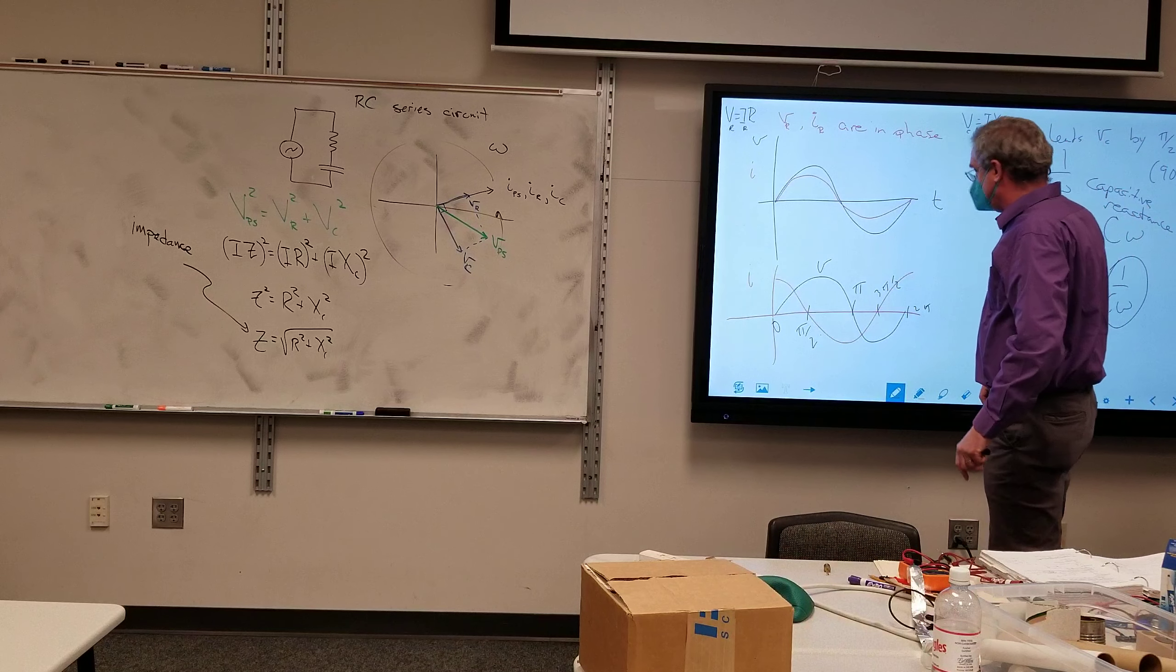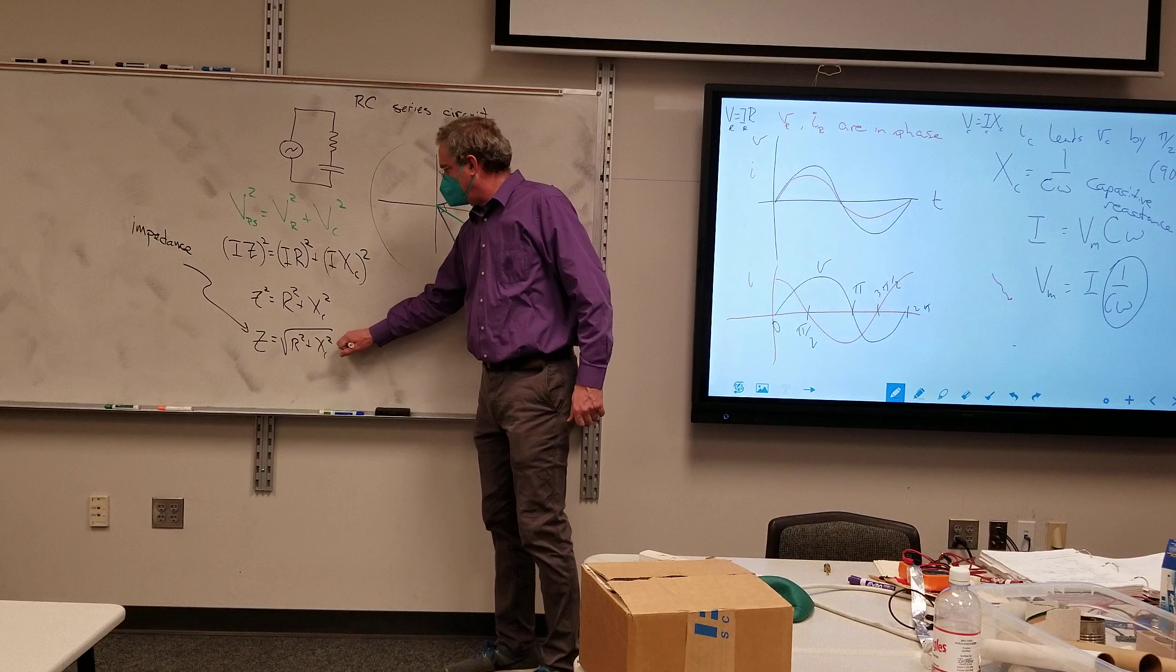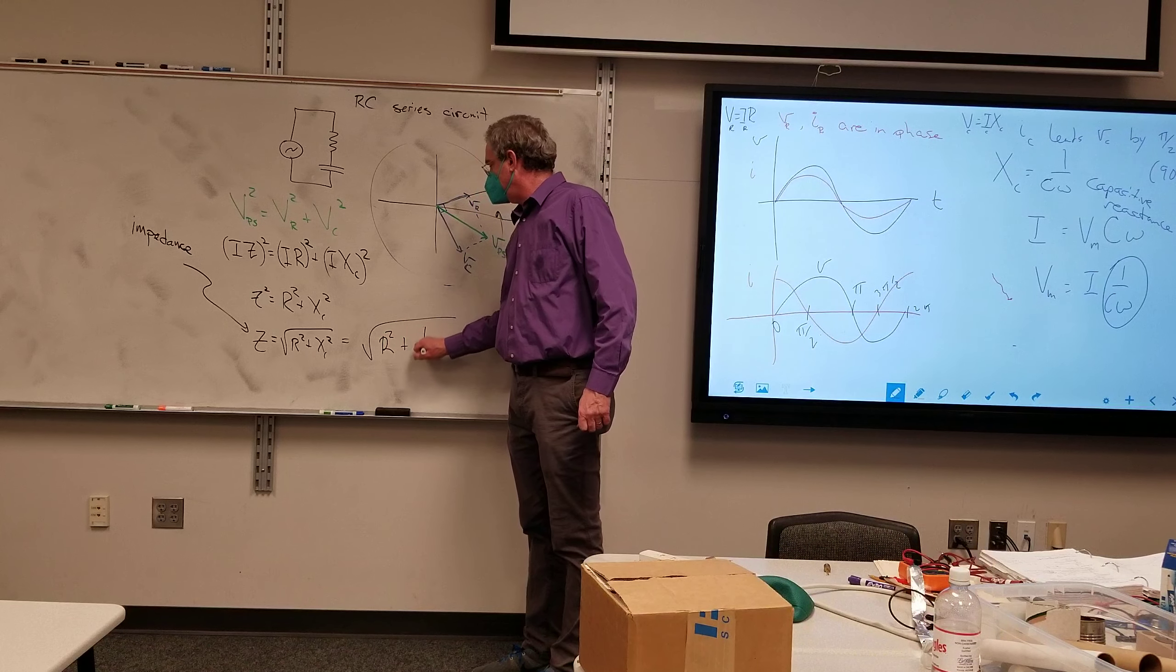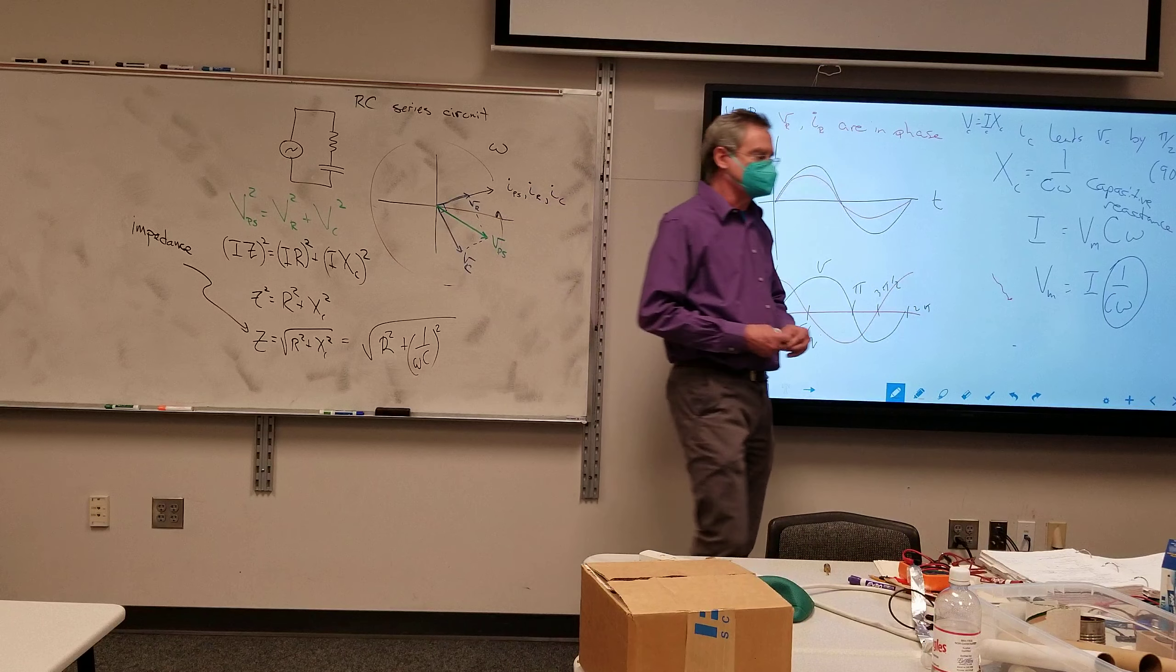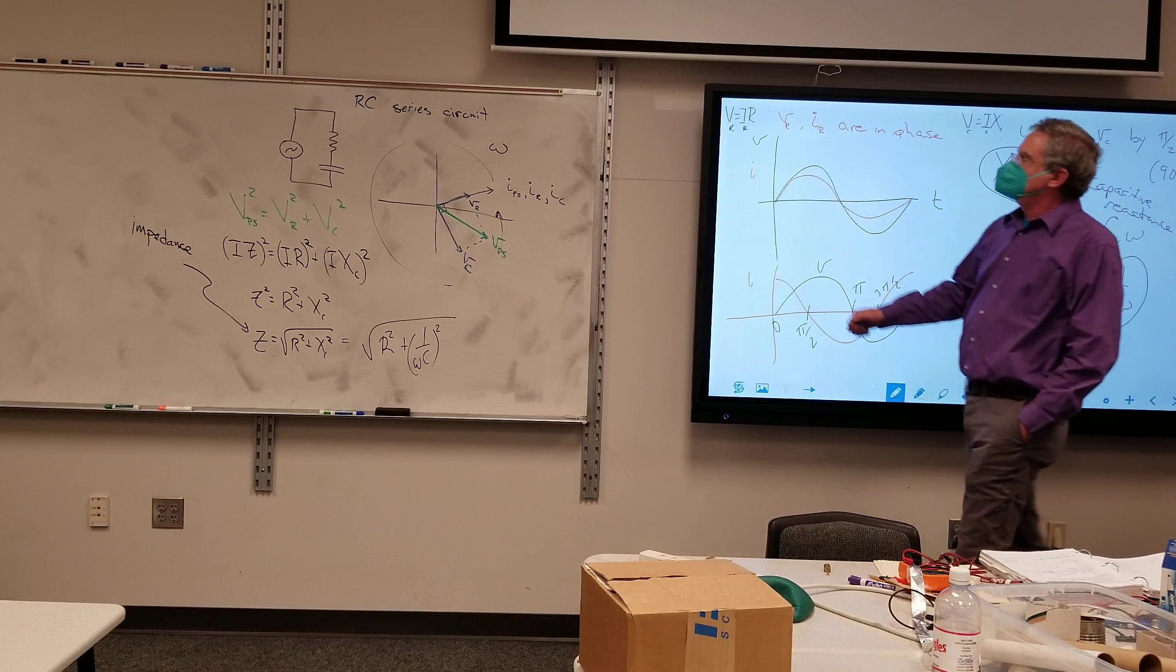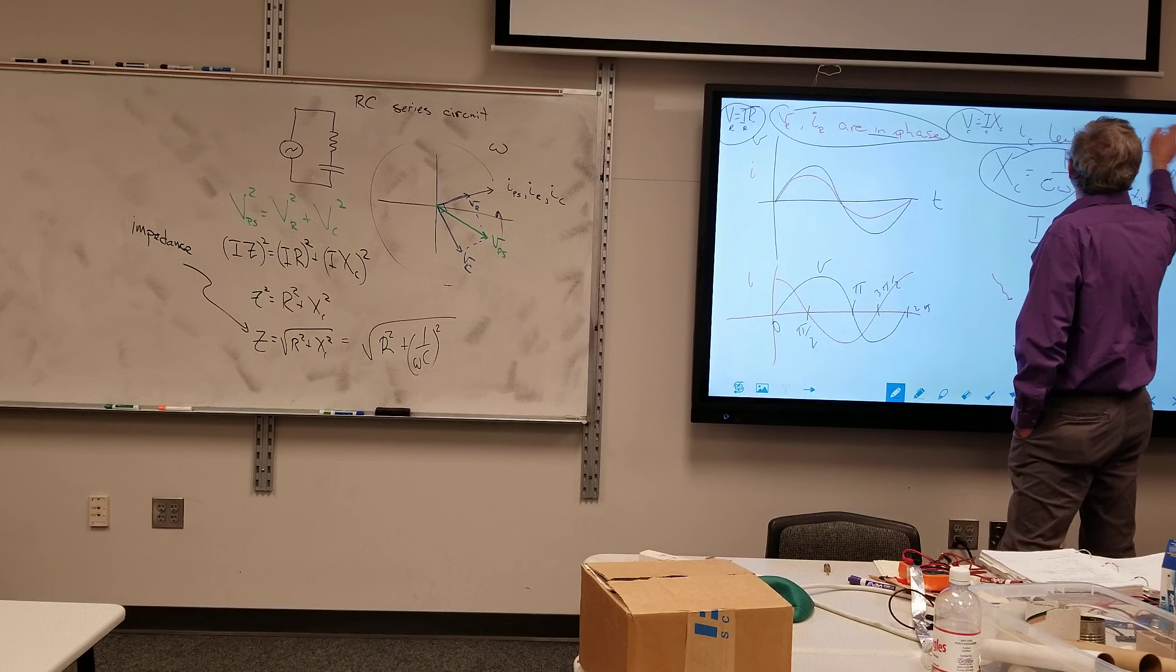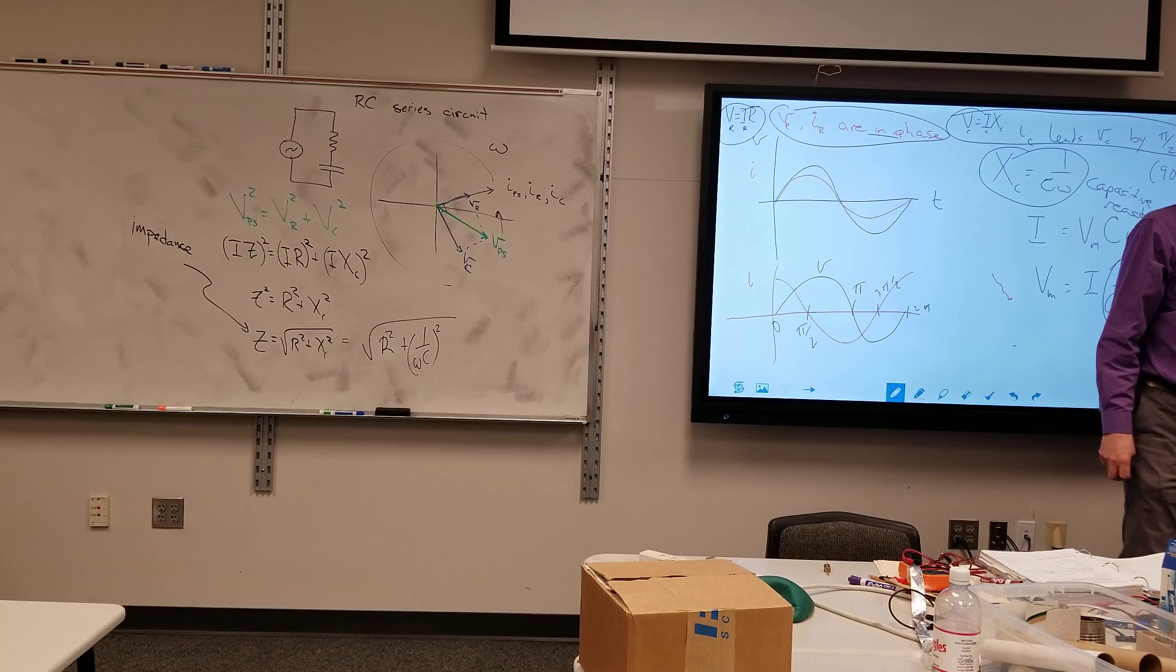All right. Let's do the RC parallel. I'm assuming people have that stuff written down already. Oh, typically you would take it one step further, so that'd be equal to r squared plus one over omega c squared, just as x of c. x of c, the capacitive reactance always equals this. That's always true, that's always true, that's always true.